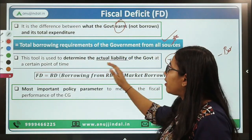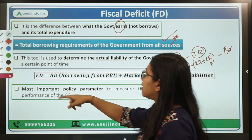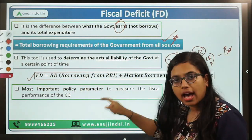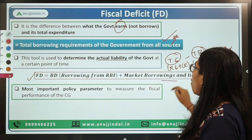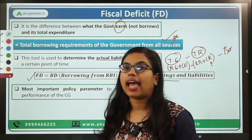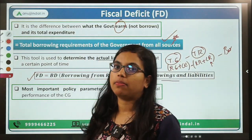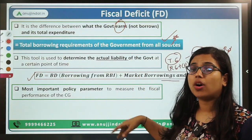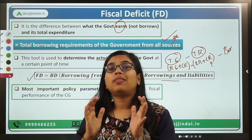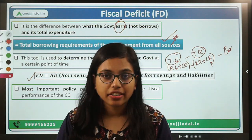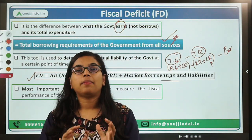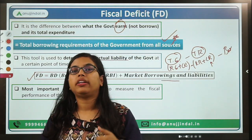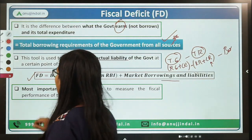So technically, fiscal deficit shows the total borrowing requirement of the government from all sources — whether from RBI, from the market — plus the interest payment it needs to make. Fiscal deficit equals budget deficit — that is borrowing from RBI — plus market borrowings and liabilities in the form of interest payment. I hope fiscal deficit is clear to you.